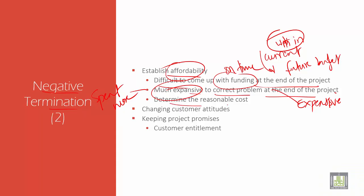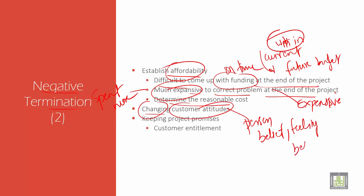Then determine the reasonable cost. If you have changing customer attitudes — it is a person's belief, feelings, and behavior towards the business — changing attitude can be sudden.